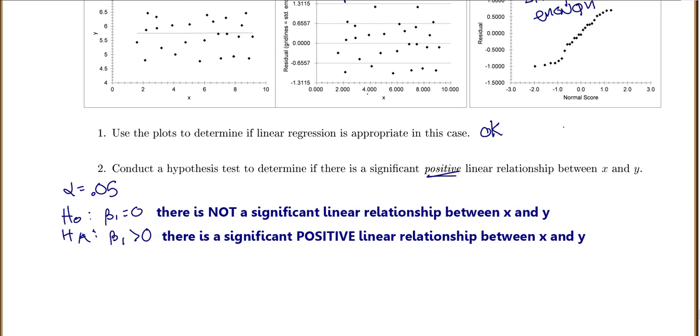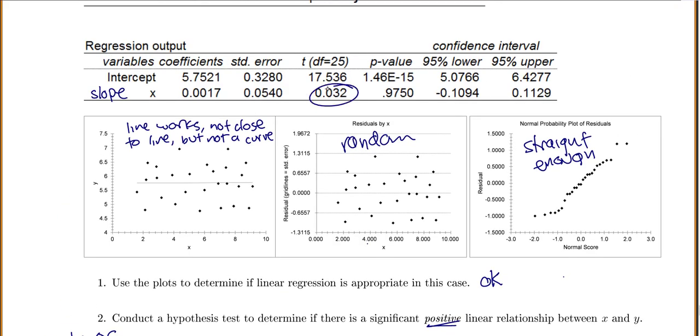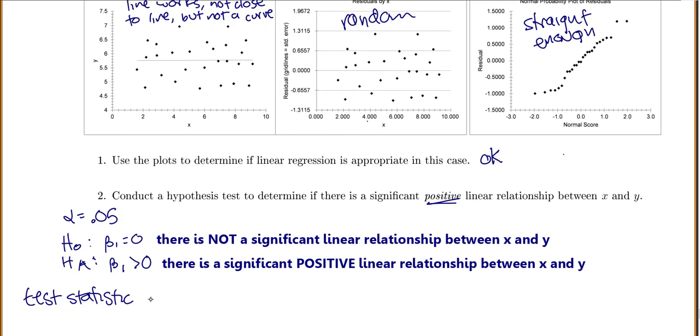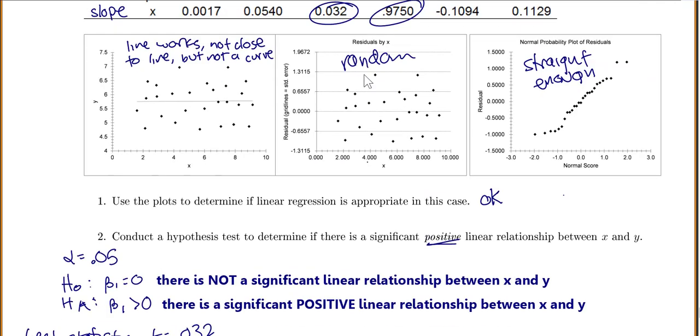Then, the next thing I need is my test statistic. If we come up, my test statistic is 0.032, and I have 25 degrees of freedom. So t equals 0.032. Degrees of freedom equals 25. My p-value is 0.975.